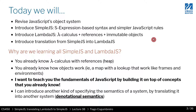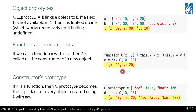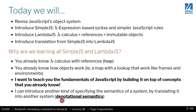This is known as denotational semantics, as opposed to the evaluation function, which is operational semantics. Operational means in terms of execution — you're interpreting code. Denotational means how you refer to a term in terms of some other language.